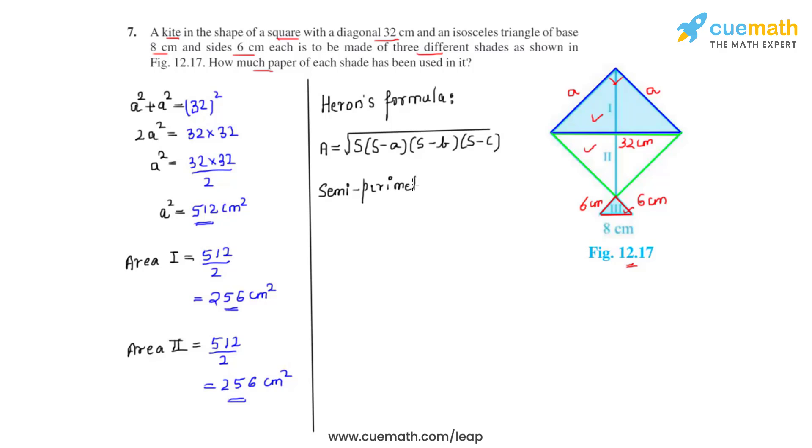The semi-perimeter can be found by adding up the three side lengths and dividing it by 2. So we add 6 plus 6 plus 8 centimeters and divide that by 2. On calculation we get the semi-perimeter s of the triangular region to be equal to 10 centimeters.